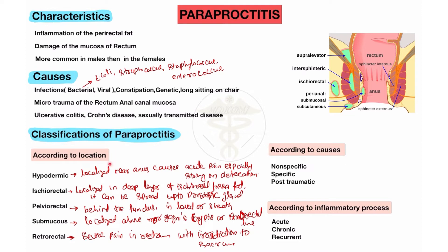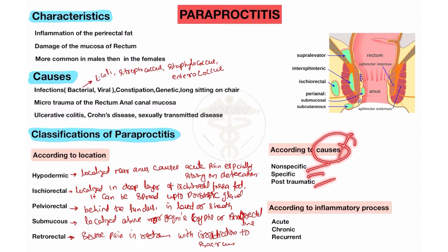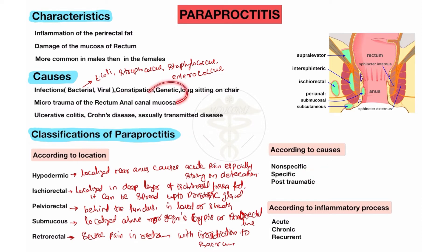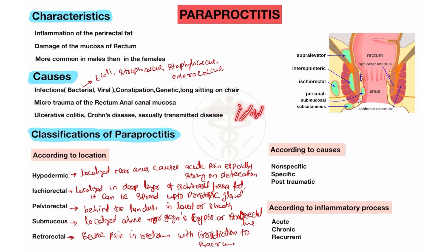According to causes, Paraproctitis may be non-specific, specific, and post-traumatic. Non-specific means unknown or idiopathic causes. Specific is due to specific bacteria like E. coli, Streptococcus — this is specific. Post-traumatic is due to micro-trauma of the rectal and anal canal mucosa. So on the basis of etiology: non-specific (unknown/idiopathic), specific (bacterial/viral), and post-traumatic (micro-trauma).